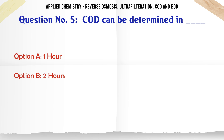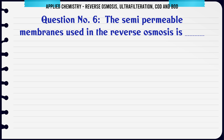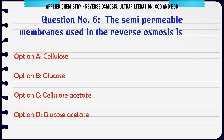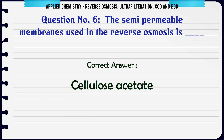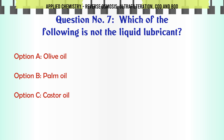The correct answer is 3 hrs. The semi-permeable membrane used in reverse osmosis is: a) cellulose, b) glucose, c) cellulose acetate, d) glucose acetate. The correct answer is cellulose acetate.